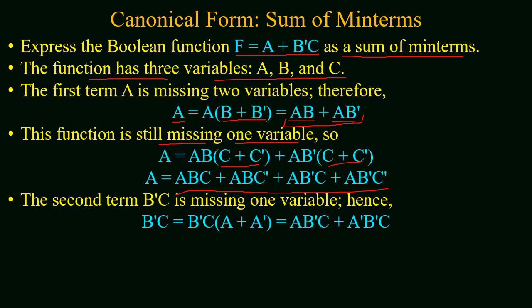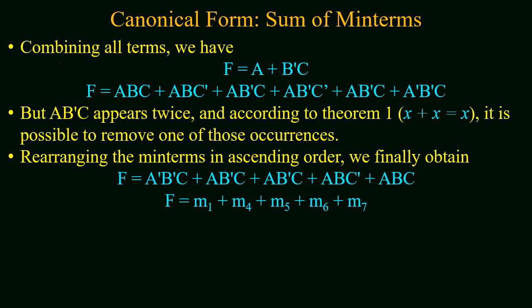For the second term b'c, only one variable is missing. So this term is multiplied by (a + a'), expanding it into a sum of 2 terms. Now we combine all the terms and place them in function f. We then look for any repeated terms — repeated terms are reduced to a single term using the boolean law x + x = x. The term a·b'·c appears twice and is reduced to one.